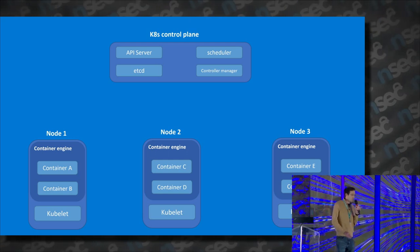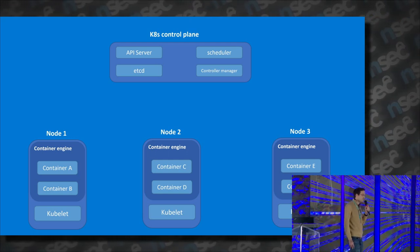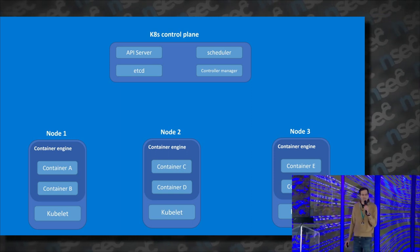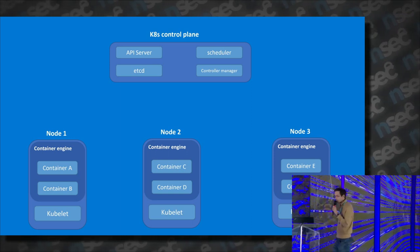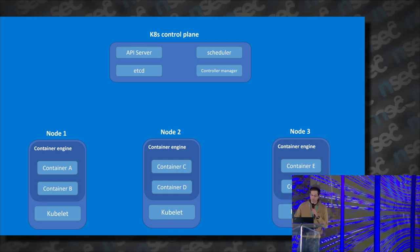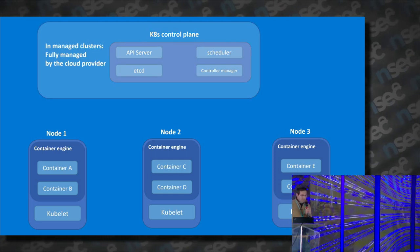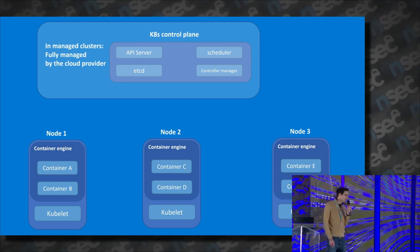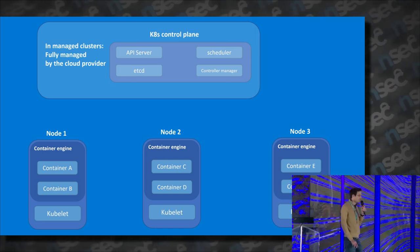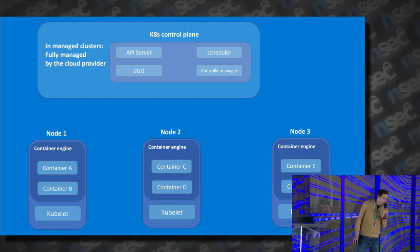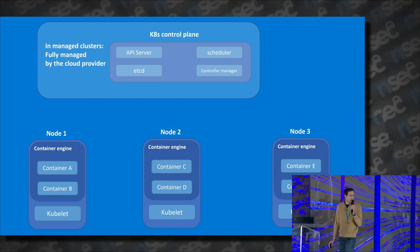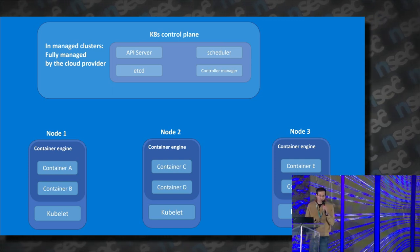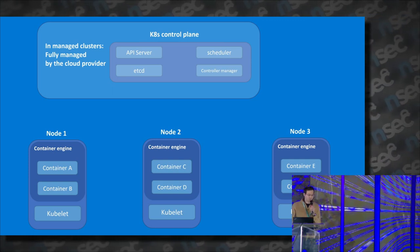Then we have the nodes, which run the containers, and each node also has an agent called Kubelet, which allows Kubernetes to manage that node. In managed clusters in the cloud, such as AKS in Azure, EKS in Amazon, or GKE in Google, the control plane is fully managed by the cloud providers, so you as a user don't have direct access to that control plane.